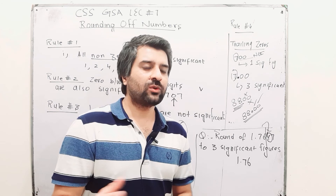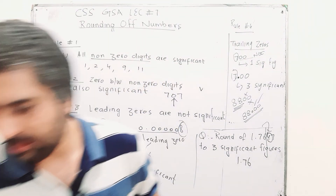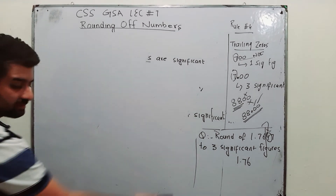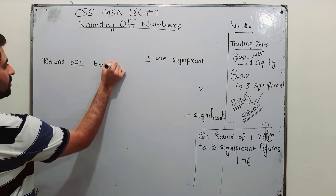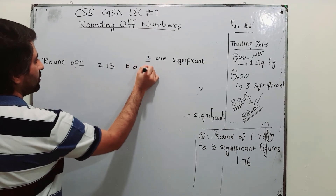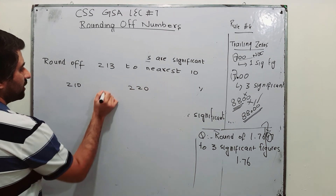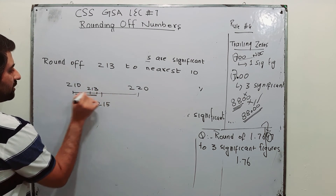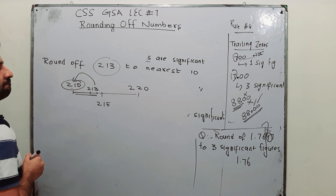One more concept: rounding off to the nearest 10, nearest 100, or nearest 1000. For example, round off 213 to the nearest 10. 213 is between 210 and 220, and the middle number is 215. Since 213 falls below 215, it is rounded off to 210. So rounding 213 to the nearest 10 gives 210.